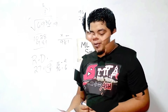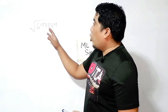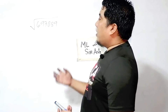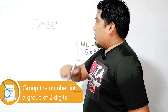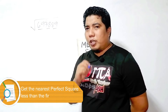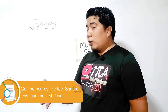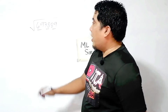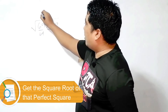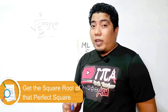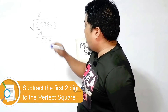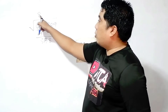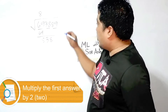Now let us go to our final example. For our final example, we have the square root of 693,889. We divide this into two-digit groups. We have 69, then 38, then 89. What is the nearest perfect square less than 69? That is 64. The square root of 64 is 8. If you subtract 69 minus 64, you get 5, and then you bring down 38, giving you 538. The next thing is to multiply 8 by 2: 8 times 2 is 16.